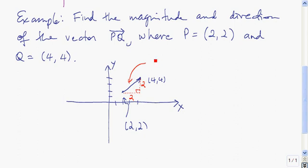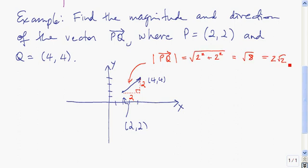We use absolute value signs to denote the magnitude of the vector. Using the Pythagorean theorem, the magnitude of vector PQ is 2√2.